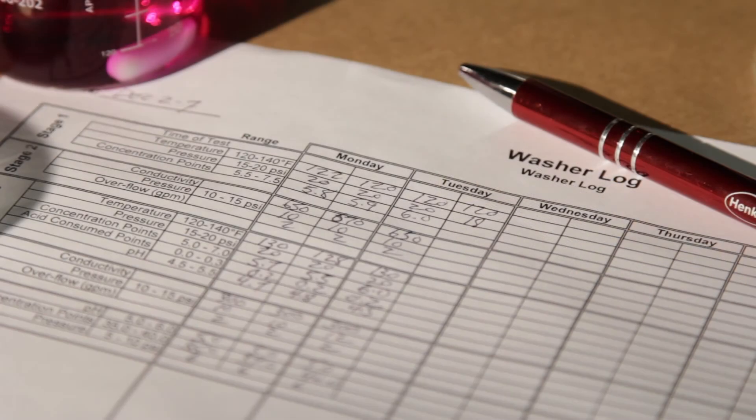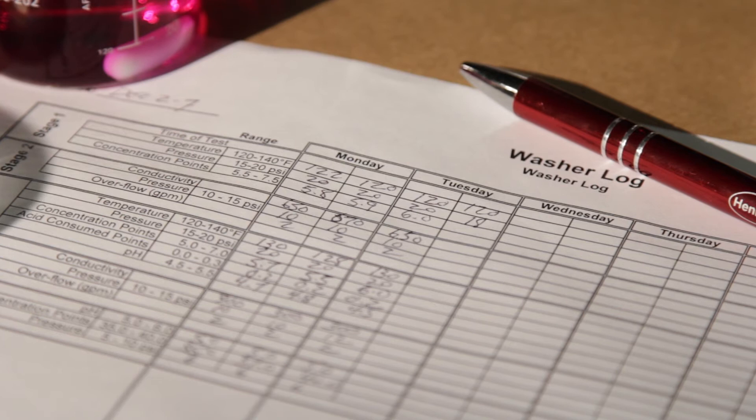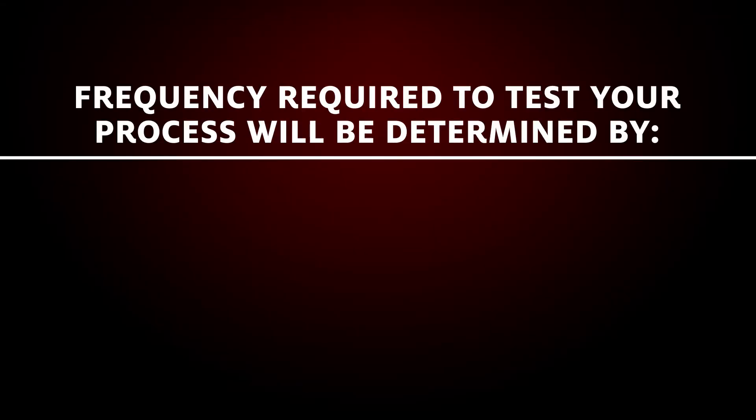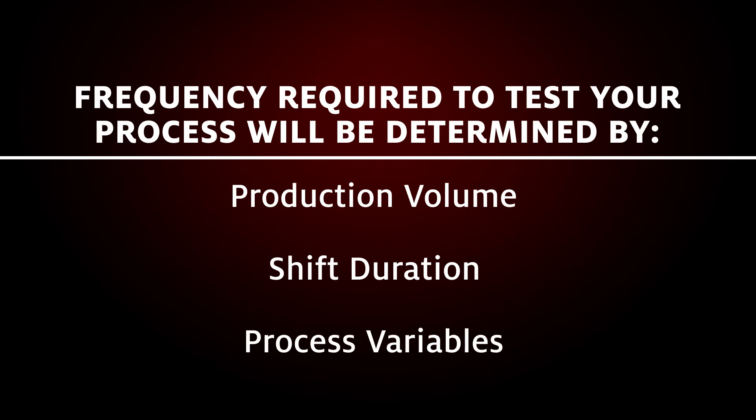Once you have completed your titration, record the value into your quality system. If additions or adjustments are required, record those too. The frequency required to test your process by titration will be determined by a number of factors, such as production volume, shift duration, and process variables.